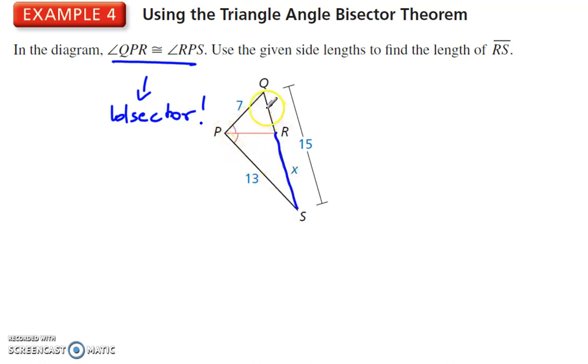So we know that this length, QR to RS, is like 7 to 13. Well, we don't know QR, we don't know RS, but we know that these added together give me 15. So, QR is 15 minus X.